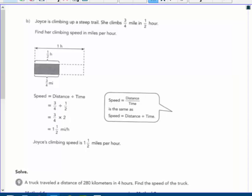Okay, so her speed. Find her speed. Speed is equal to distance divided by time. Well, the distance was three fourths. The time was a half.